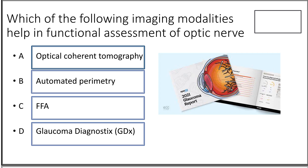Seventeenth question: which imaging modality helps in functional assessment of the optic nerve — OCT, automated perimetry, FFA, or glaucoma diagnosis? The answer is automated perimetry. The other three modalities assess structural changes, whereas automated perimetry assesses the visual field, providing functional information about the optic nerve.